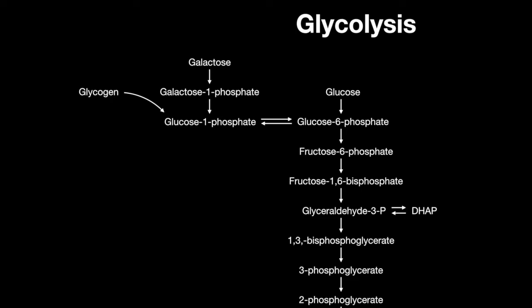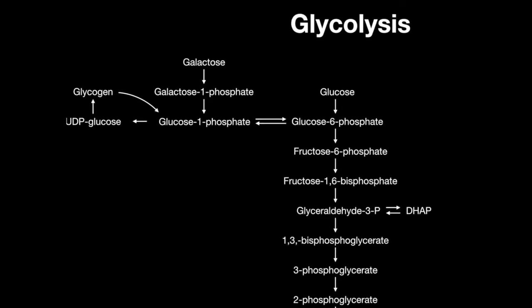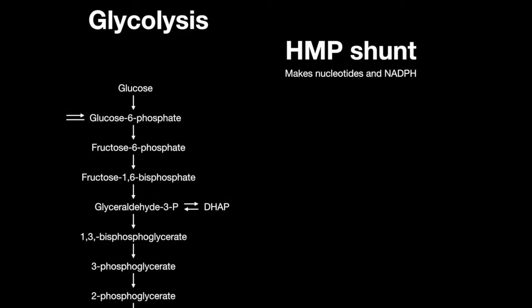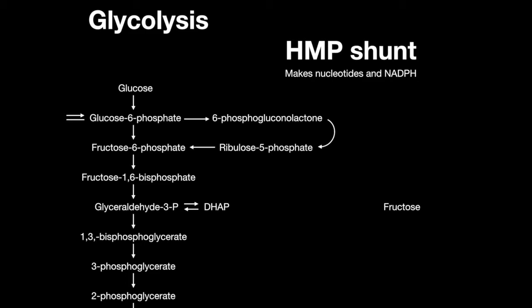Glucose 6-phosphate can also go in the reverse direction and become glycogen by first becoming UDP glucose. The HMP shunt is useful in making nucleotides and NADPH. It also branches off from glucose 6-phosphate and returns to fructose 6-phosphate.